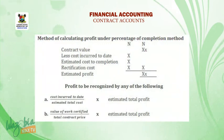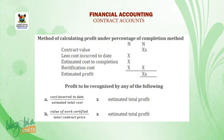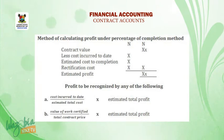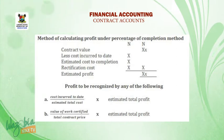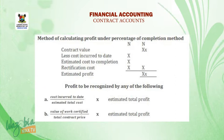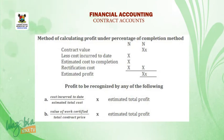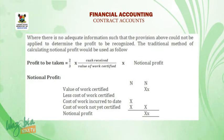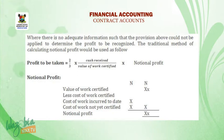Method of calculating profit under the percentage of completion method: Contract value, less cost incurred to date, less estimated cost to completion, less rectification cost — that gives us estimated profit. Profit to be recognized by either: A. Cost incurred to date divided by estimated total cost, multiplied by estimated total profit; or B. Value of work certified over total contract price, multiplied by estimated total profit. Where there is no adequate information such that those methods cannot be applied, the traditional method of calculating notional profit will be used.